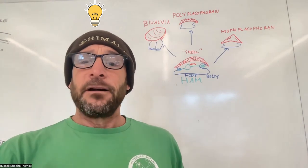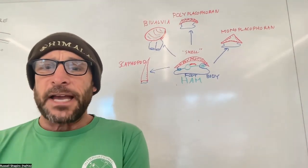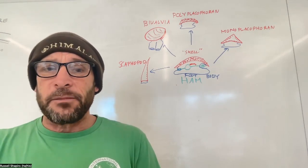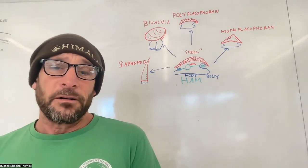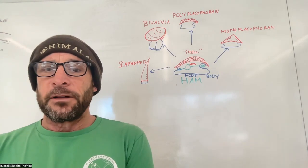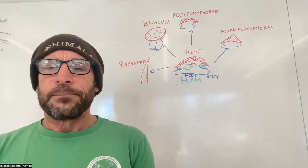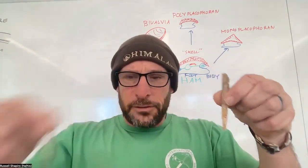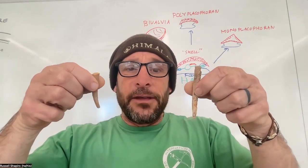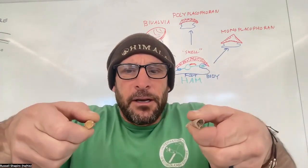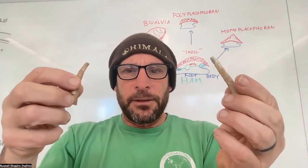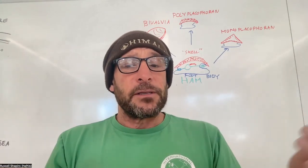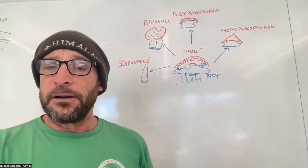Let's do another one — the scaphopods, commonly called tusk shells. They're an interesting group, really hard to see in nature because they're found in the sediment, usually in the deep sea. We don't find them as common in the modern unless you're dredging the seabed, but we do find them in the fossil record. They're still a little enigmatic about how they eat and live. Here are some fossil scaphopods — these are giant ones. Most that I see are like the size of little toothpicks. These came from a methane seep deposit in the Paleocene. Scaphopods are our next smallest group.